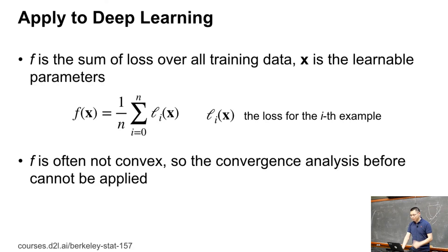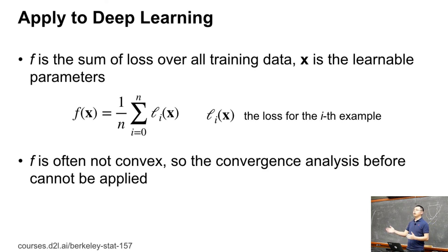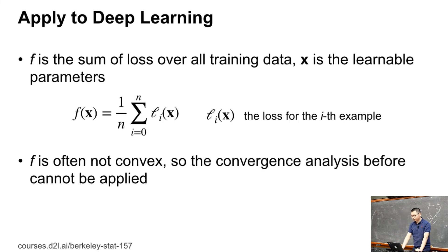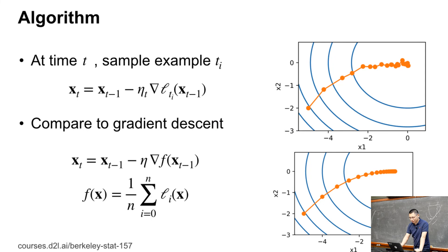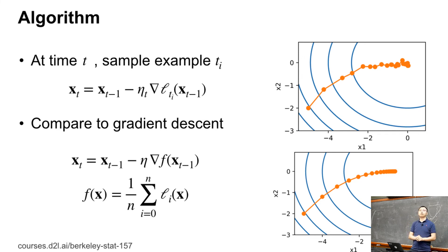Applied to deep learning, f is the sum of losses over all training data, and x is all the learnable parameters — convolution kernels, weights in dense layers, and biases. However, f is usually not convex, so the previous theory does not directly apply. Now, briefly, stochastic gradient descent (SGD): instead of computing the full gradient over all training data, every time we sample a single example x_{t-1} to compute the gradient. The expectation of this stochastic gradient equals the true gradient — that is the key unbiased estimator assumption of SGD.